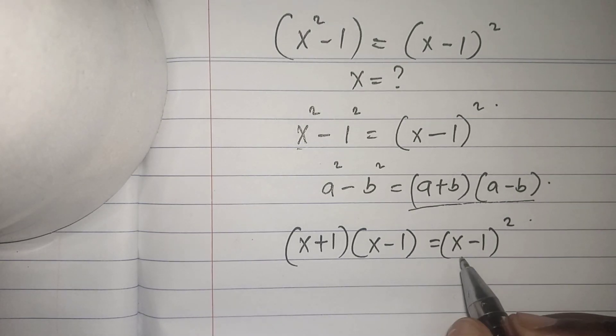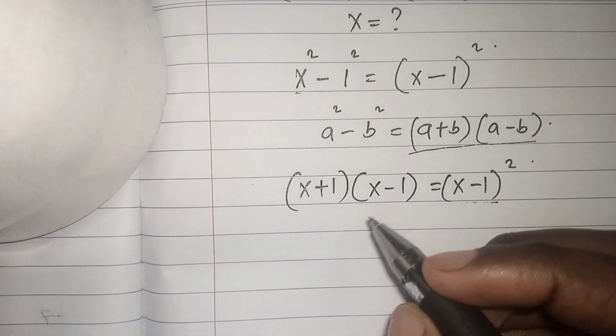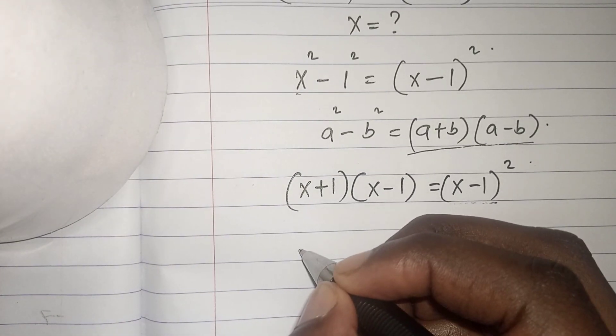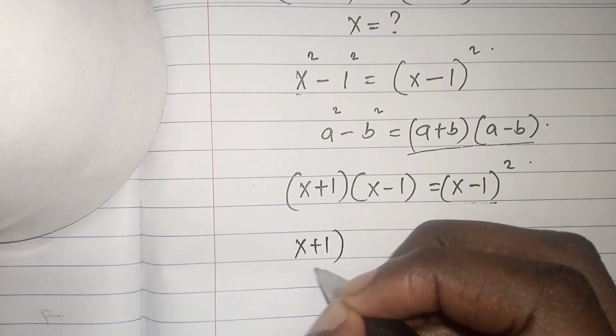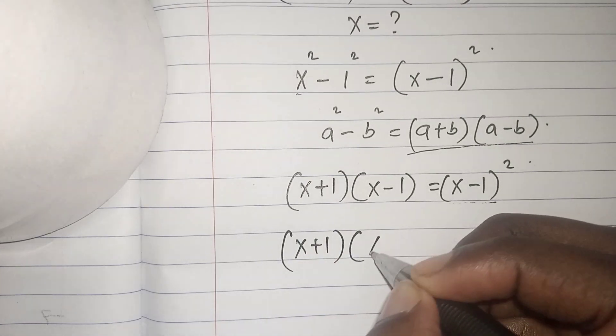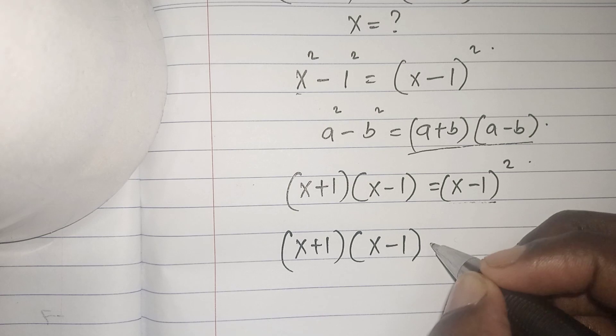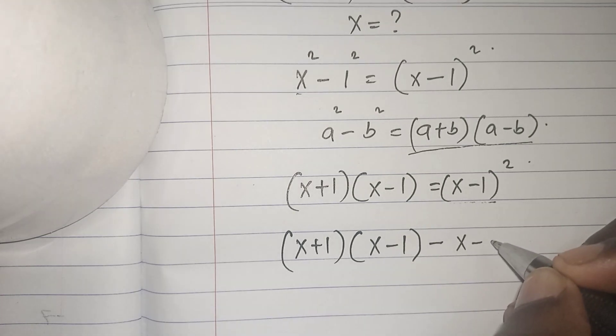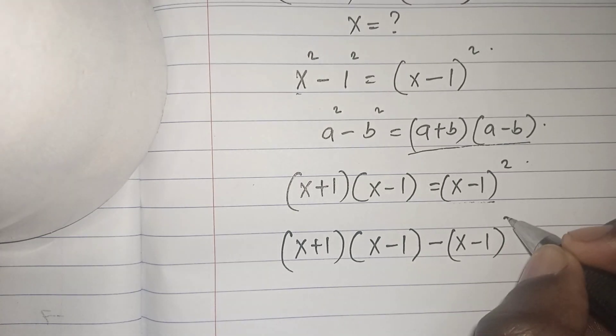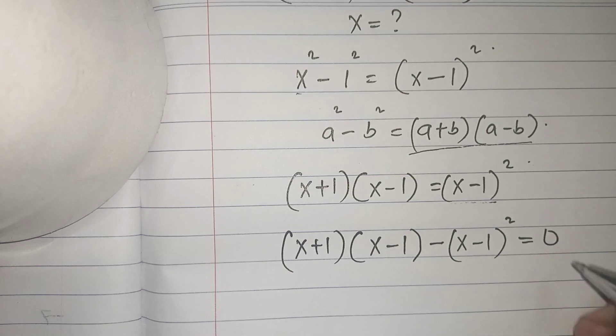Our next step is to bring everything to the left-hand side: (x + 1)(x - 1) - (x - 1)² = 0.